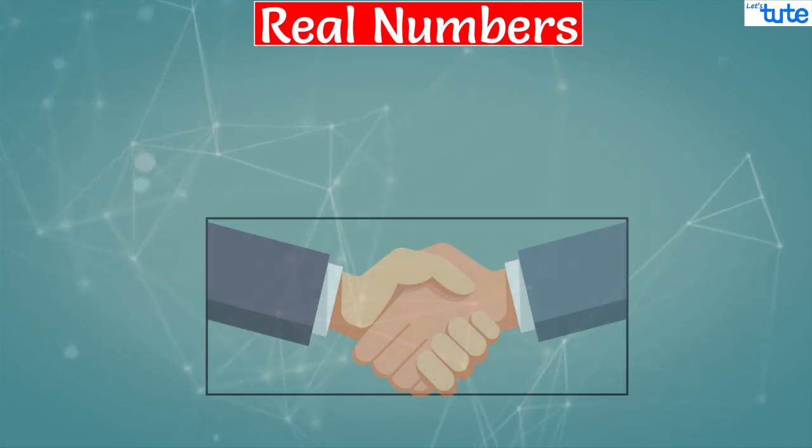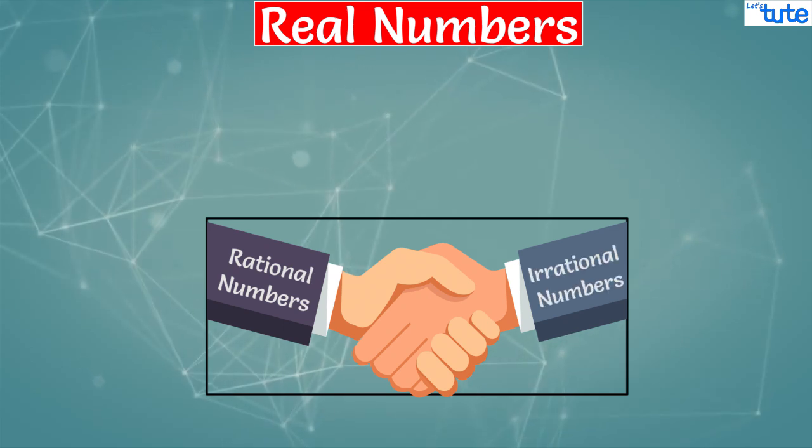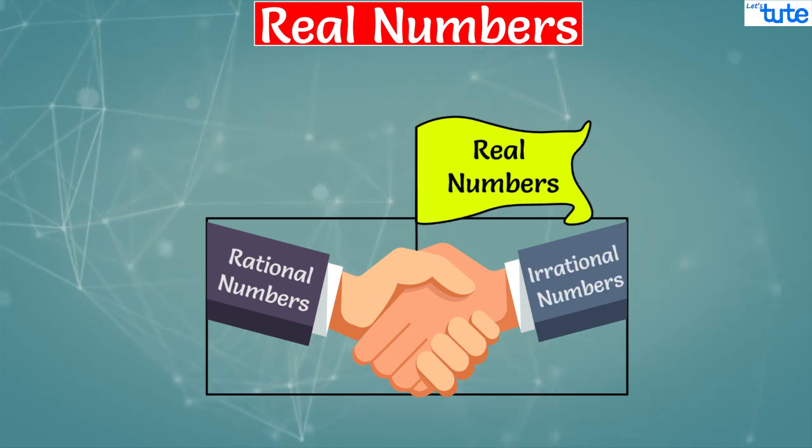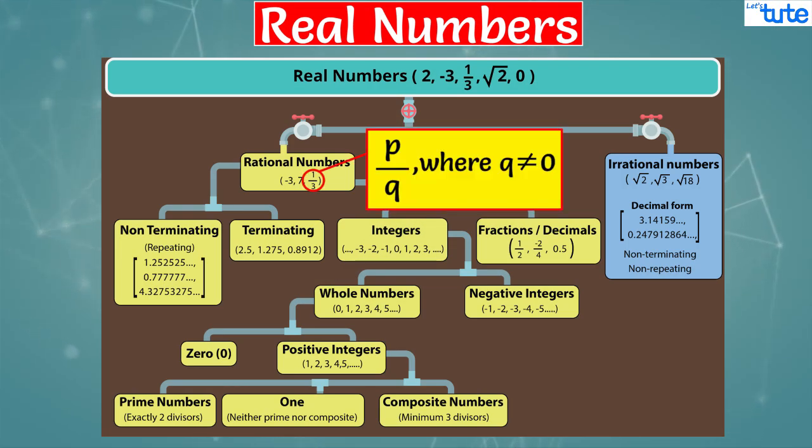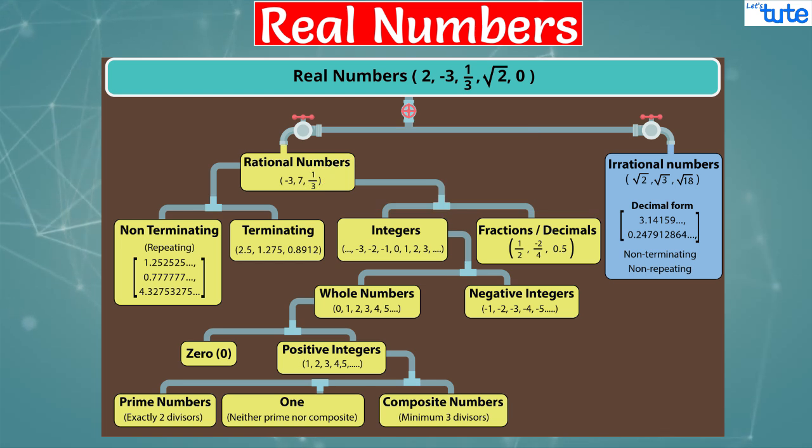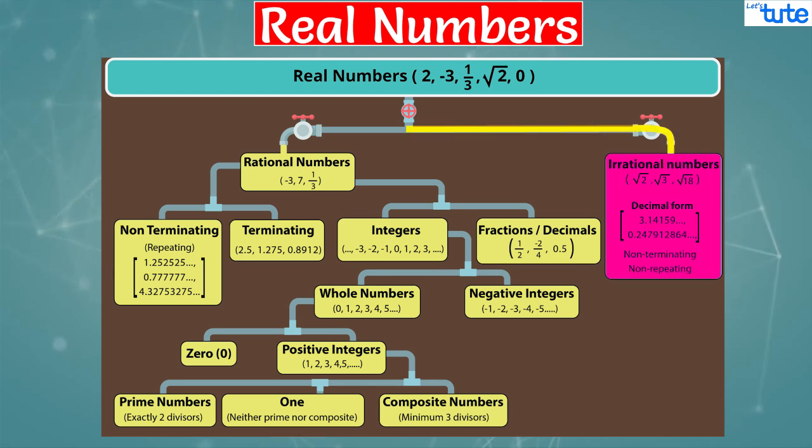As we already know, rational numbers and irrational numbers together form real numbers. Rational numbers are the numbers which can be represented in the form of P by Q, where Q can never be equal to 0. These numbers can be terminating or non-terminating. Whereas, numbers which neither terminate nor repeat are called irrational numbers. So from this we can conclude that all numbers are real numbers.